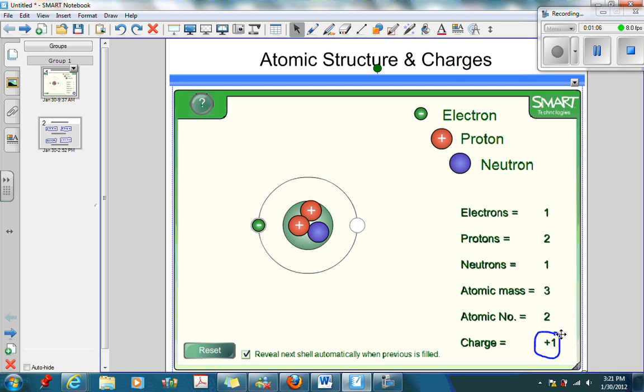On the other hand, if I add an electron to this, the number of electrons becomes more than the number of protons. In this case, it is three electrons and two protons, so the net charge is negative one. That's how charges are produced.